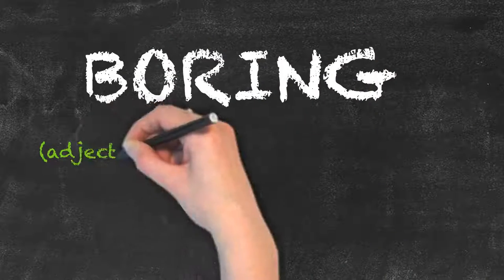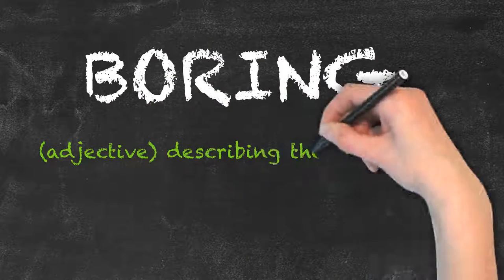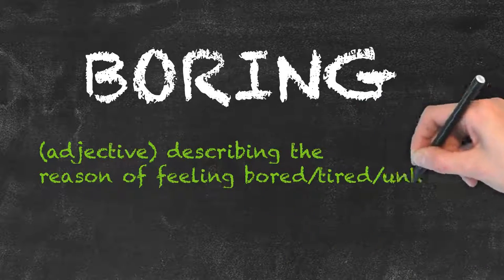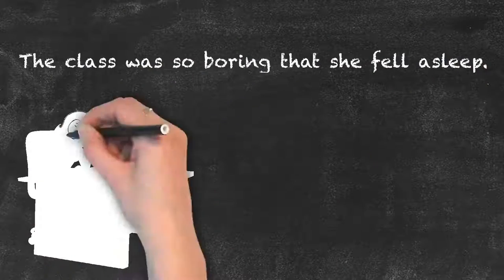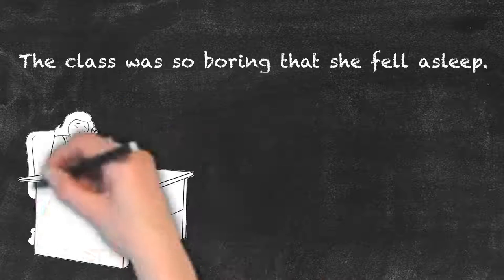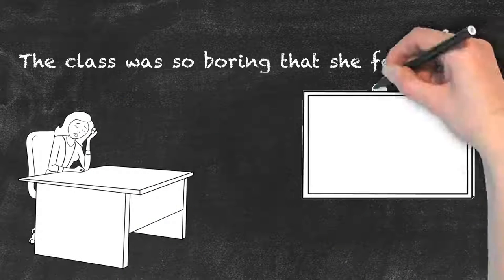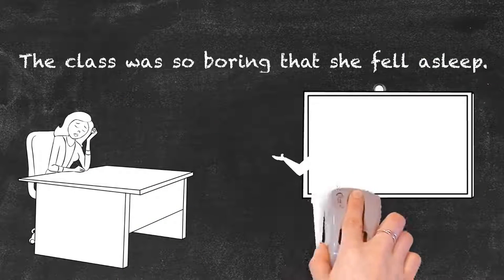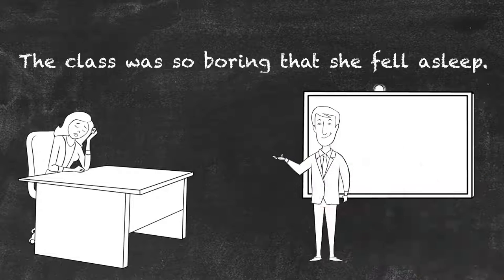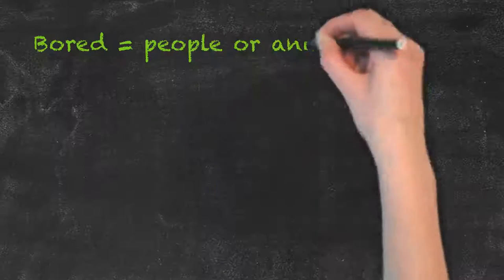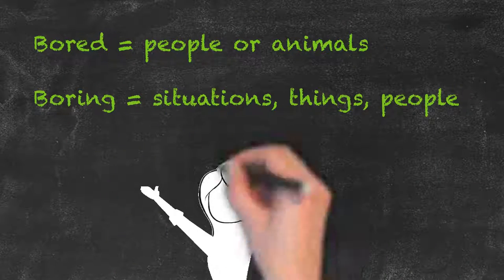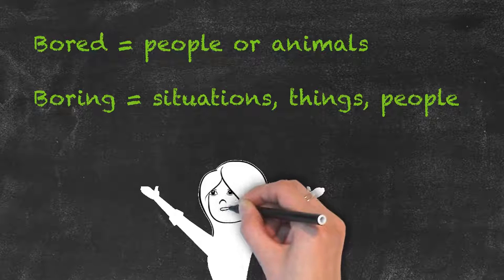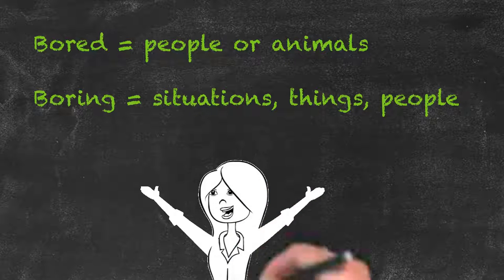Boring is also an adjective, but it describes the cause, the reason of the feeling. For example, the class was so boring that she fell asleep. The class is the reason for her feeling. Keep in mind that only people or animals can be bored, while things, situations, and people can be boring.